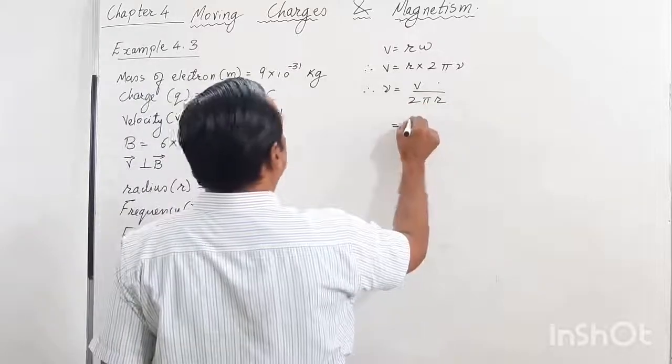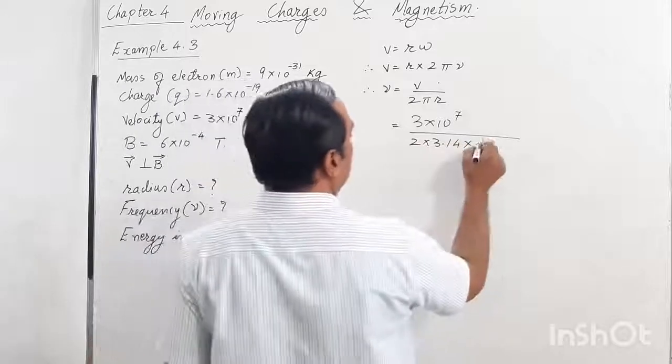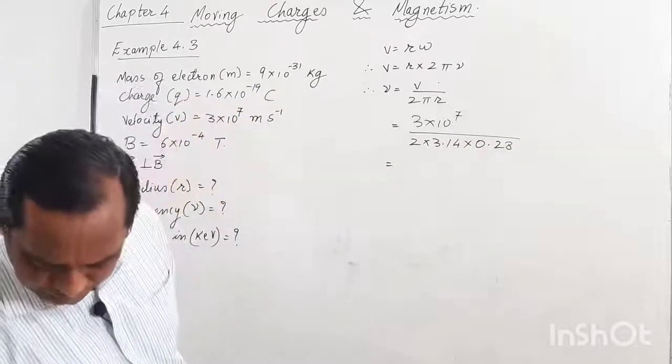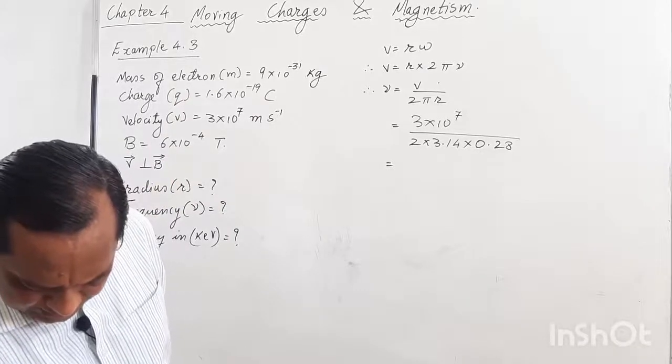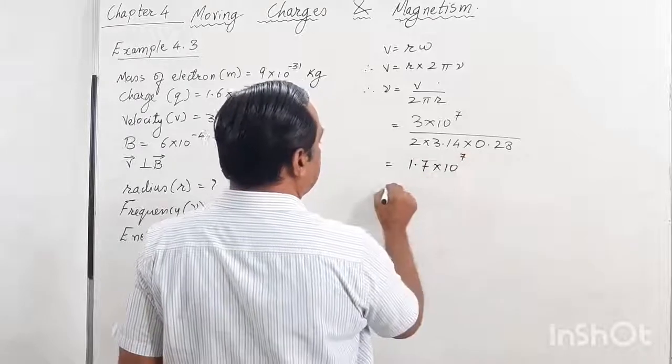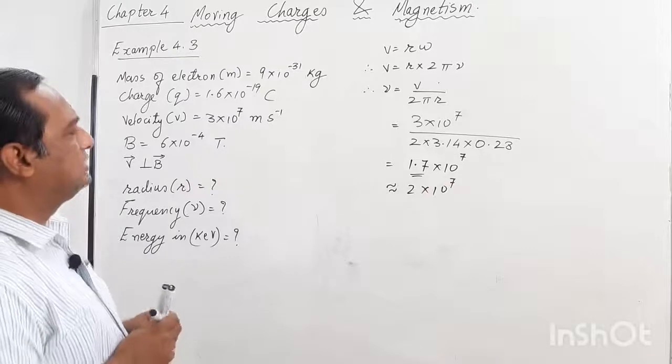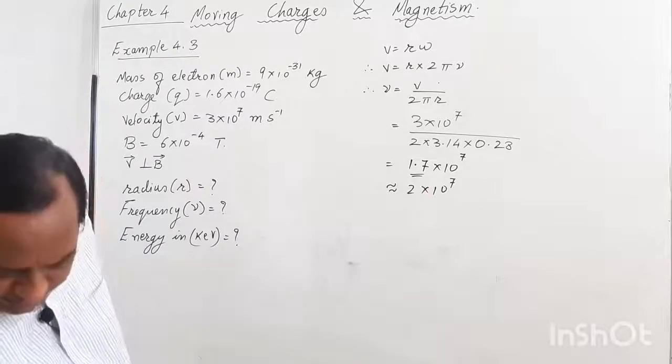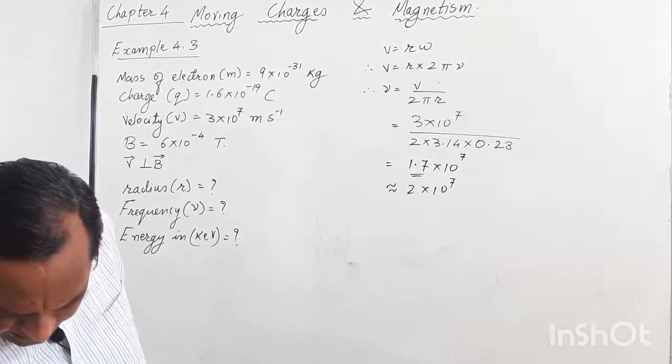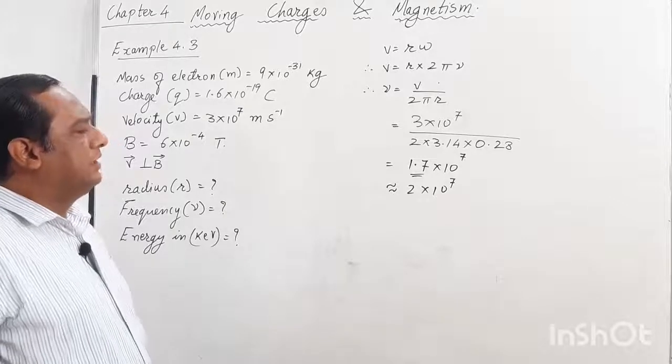Let us substitute the values: 3×10⁷ divided by 2×3.14×0.28. If I divide 3 divided by 2 divided by 3.14 divided by 0.28, you get 1.7×10⁷.